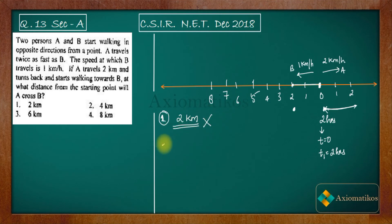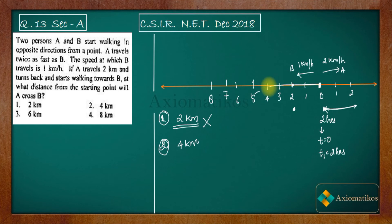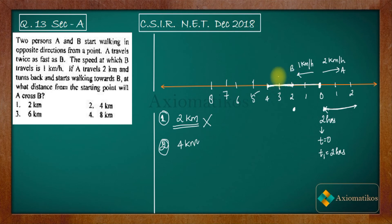Now let us check option four, which says four kilometers. That means when B reaches the four-kilometer mark, A is going to cross it there. How much time does B take to reach four kilometers? Since B travels at one kilometer per hour, B will reach four kilometers in four hours.